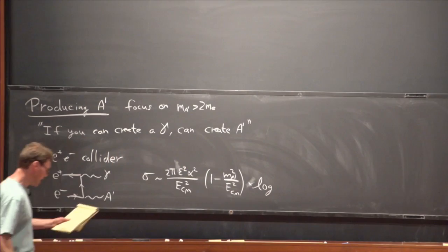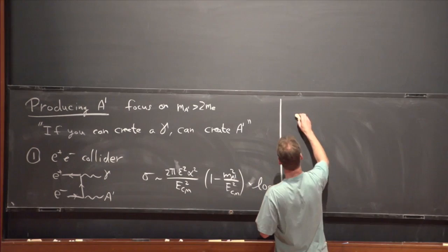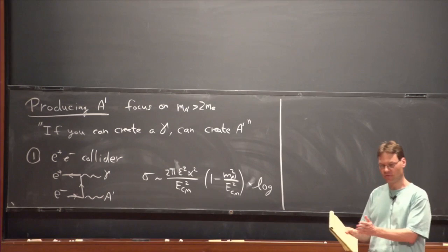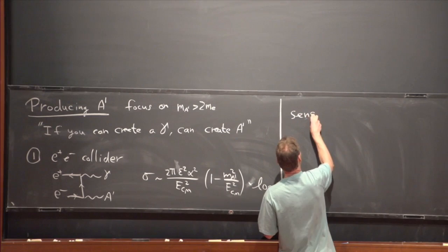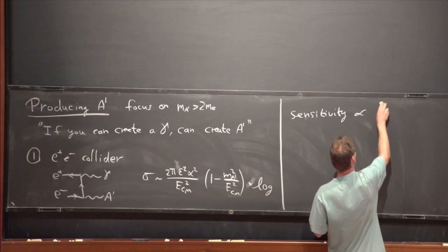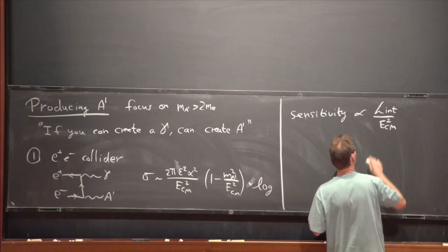The cross-section goes as one over the center-of-mass energy squared. If you ask how sensitive different experiments are to this kind of signal, what you want is a low-energy collider with a lot of data — high luminosity. The sensitivity will be proportional to the integrated luminosity over the center-of-mass energy squared. So there are various colliders, and we can make a little table.